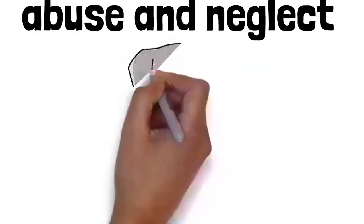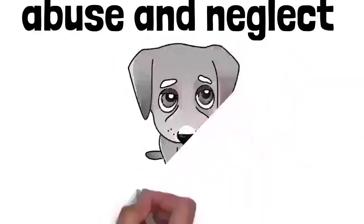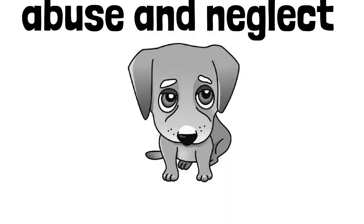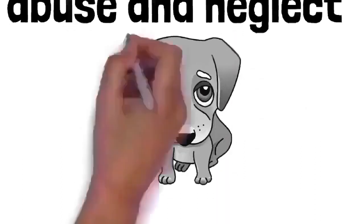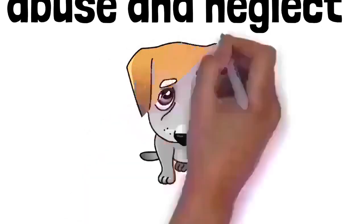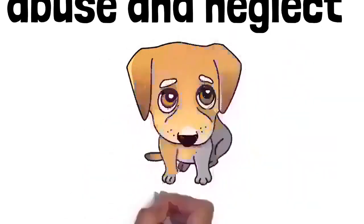Usually when you adopt a pet, the cost of spay/neuter, first vaccinations, and sometimes even microchipping is included in the adoption price, which can save you some of the upfront costs of adding a new member to your family. Depending on the animal, you may also save on housebreaking and training expenses.